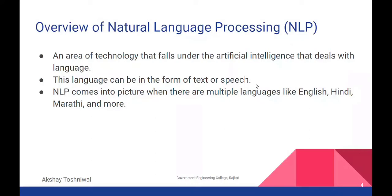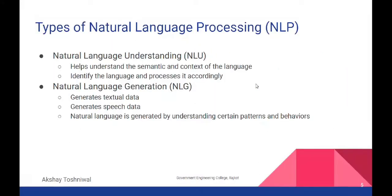For example, you have an English document and you can build a solution where you scan the document using an OCR-based solution. By implementing OCR you can scan what is present in the document and based on that content take some actions. NLP comes into picture when dealing with multiple languages or text processing. There are two major types: natural language understanding and natural language generation.